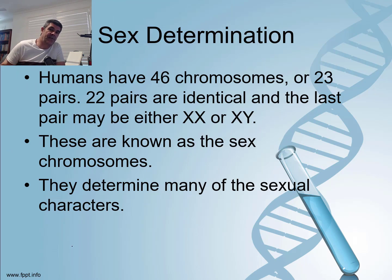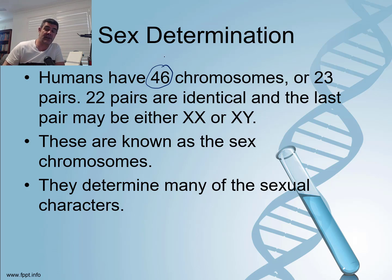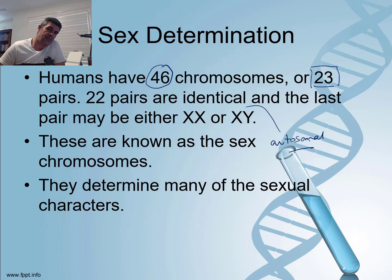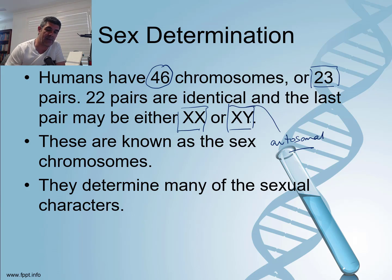There is a difference between sex determination and sex linkage. Humans have 46 chromosomes — 23 pairs. 22 of those are autosomal. The final pair could be identical — both Xs — which would mean a female, or they could be an X and a Y, which would mean a male.